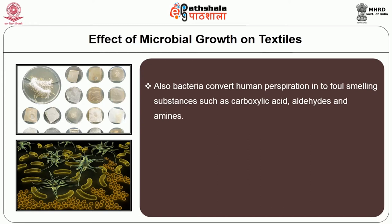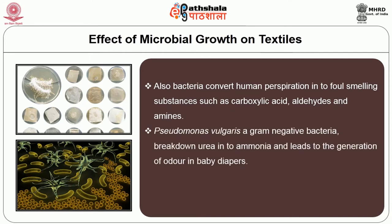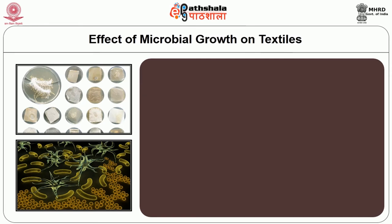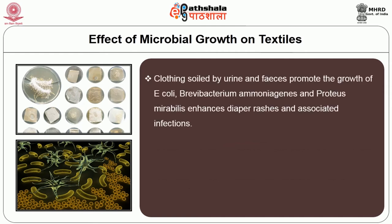Bacteria convert human perspiration into foul-smelling substances such as carboxylic acid, aldehydes and amines. Pseudomonas vulgaris, a gram-negative bacteria, breaks down urea into ammonia and leads to generation of odor in baby diapers. Garments provide moisture and darkness and thus enhance microbial infections. Clothing soiled by urine and faeces promotes the growth of E. coli, brevibacterium ammonia genes and proteus mirabilis, enhancing diaper rashes and associated infections.